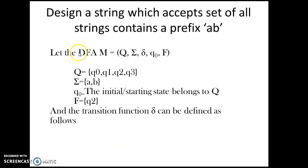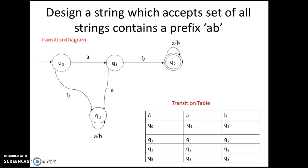For example: design a DFA which accepts the set of all strings containing the prefix 'ab'. That means you check whether the machine accepts strings whose starting characters are 'a' followed by 'b'. The DFA can be represented as Q, sigma, delta, Q0, F, and these can be filled by designing the transition diagram. The transitions are: Q0 upon a goes to Q1, and Q1 upon b.